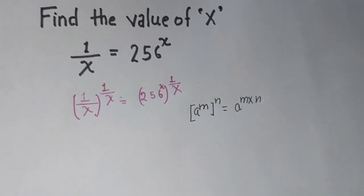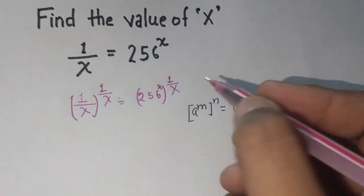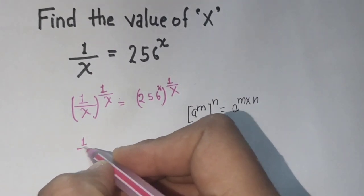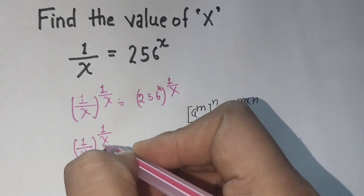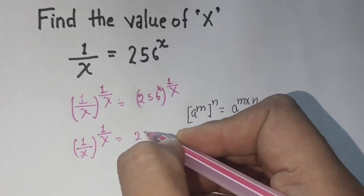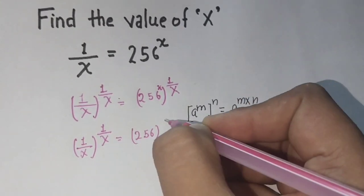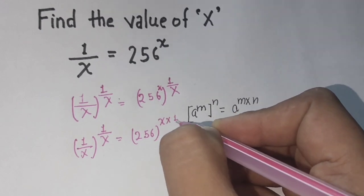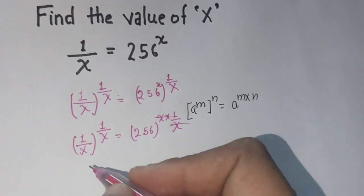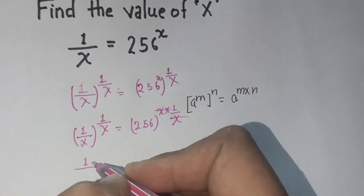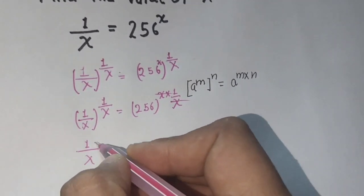Use this identity here. 256 power x multiply 1 by x - this x and this x cancel. 1 upon x to the power 1 upon x equals 256.